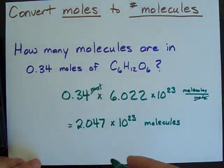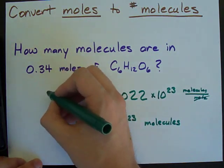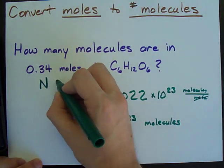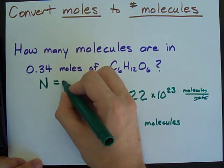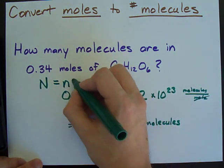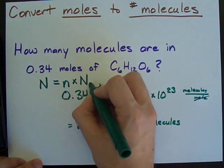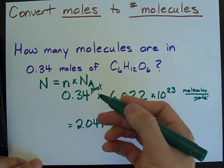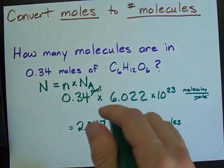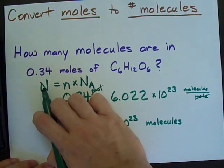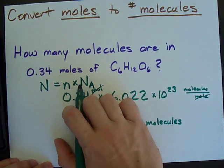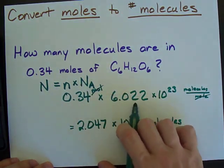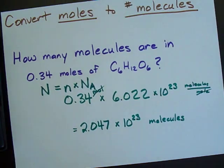There's also a formula for this. We have the number of molecules equals the number of moles times Avogadro's number. Now, I'm not a huge fan of this formula because there's so many Ns, but this is number of molecules, number of moles, and Avogadro's number, which is always 6.022 times 10 to the power of 23.